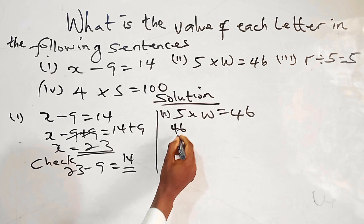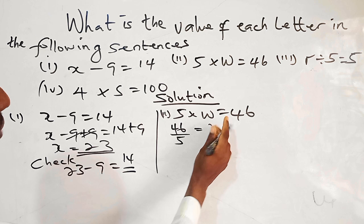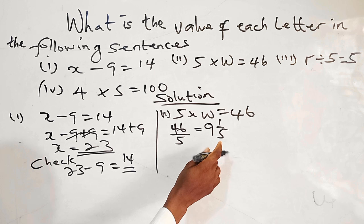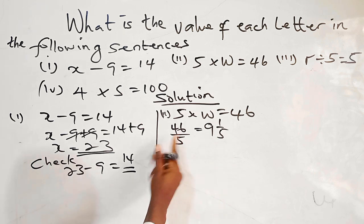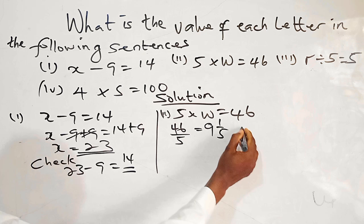So we can say 46 divided by 5. So that gives us—5 times 8 is 40, 5 times 9 is 45. So we have 9 and 1 over 5, or we have it as 46 over 5. This one is in a mixed fraction or improper fraction as W.